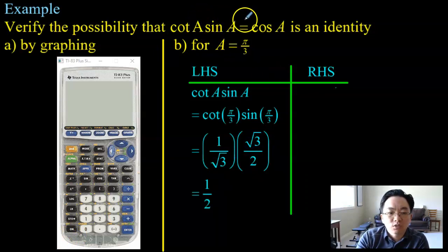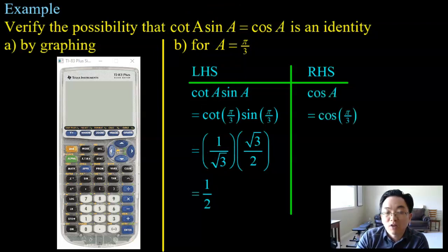So if you sub in pi over three in for A, the left-hand side will be equal to half. The right-hand side is very simple. It's just cos A. And you're going to sub in pi over three for A. And if I were to go back to that unit circle that I drew, pi over three, the cosine of pi over three is just half. So we get half regardless of which side we're on. And so therefore, we are reasonably convinced that this is an identity.